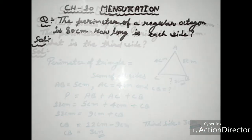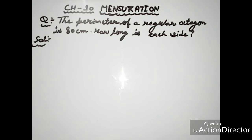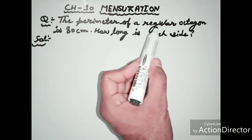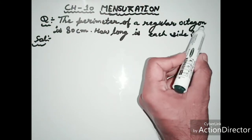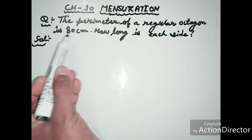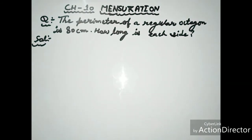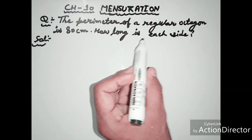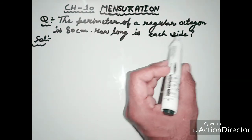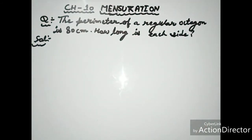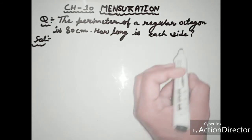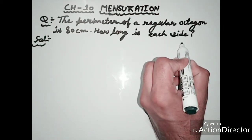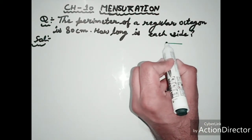The next example: The perimeter of a regular octagon is 80 centimeters. How long is each side? An octagon has 8 sides.